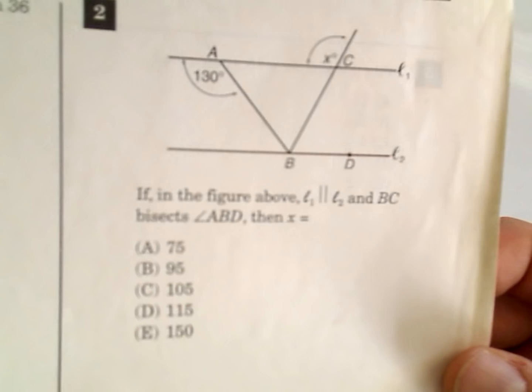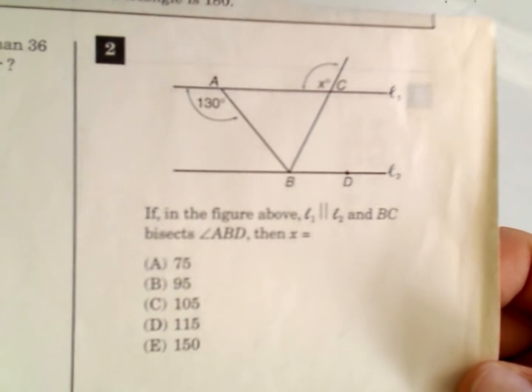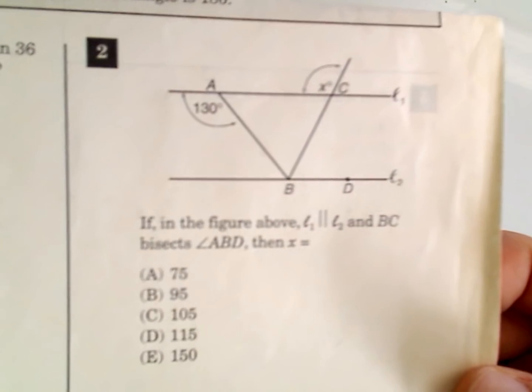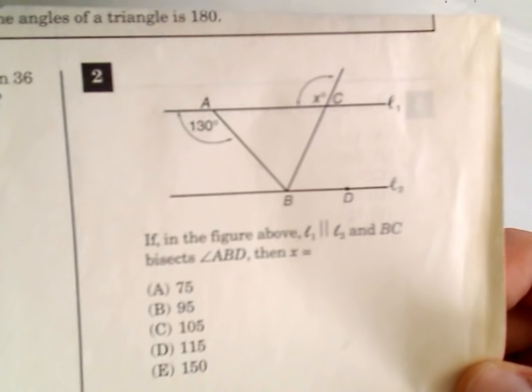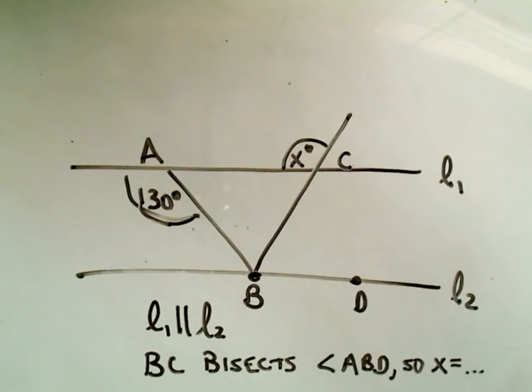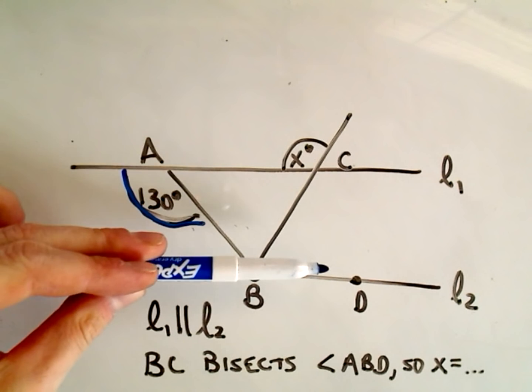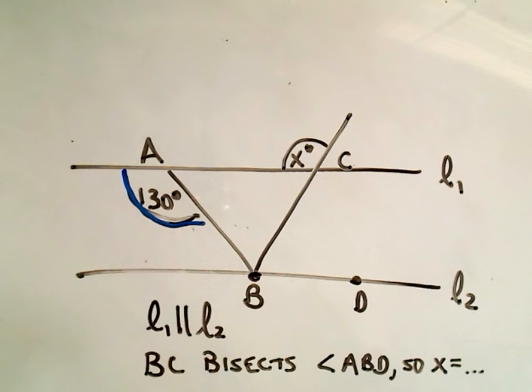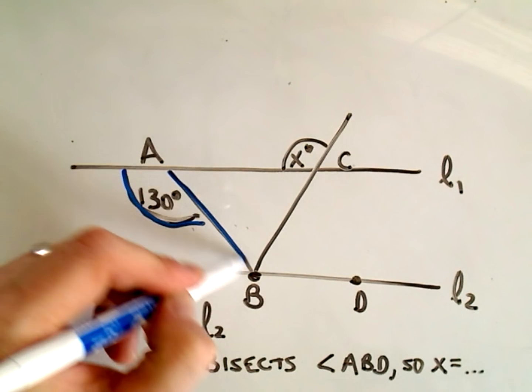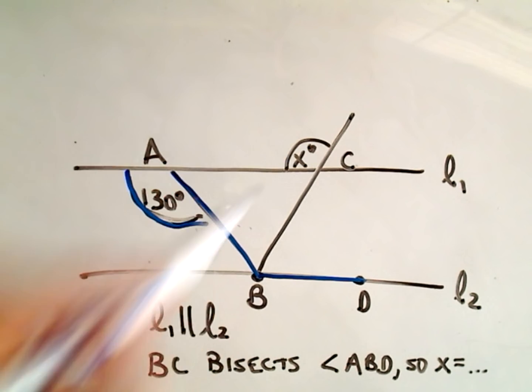So in the next one, it says, if in the figure, line L1 and L2 are parallel, and BC bisects angle ABD, then the value of X, this angle up here, is going to equal what? So I drew a little picture of it. This angle is 130 degrees, so L1 and L2 are parallel. We have this line BC, and that bisects the angle ABD. Okay, and we want to figure out this angle X.